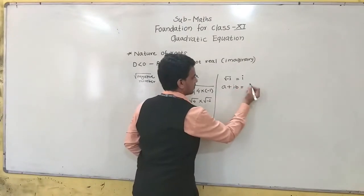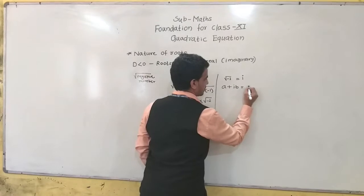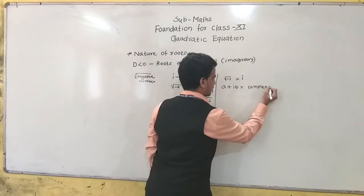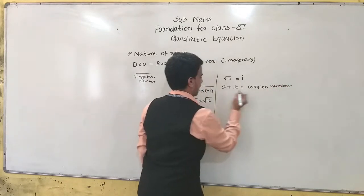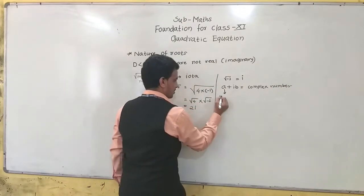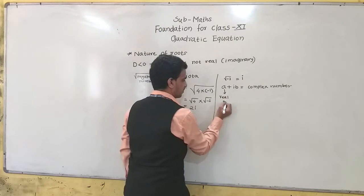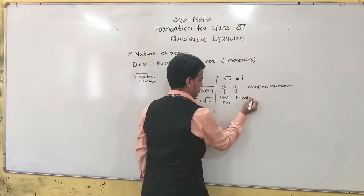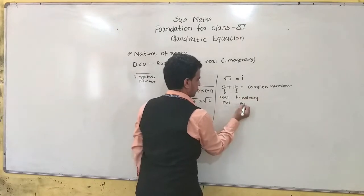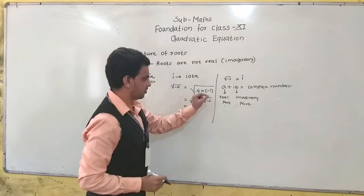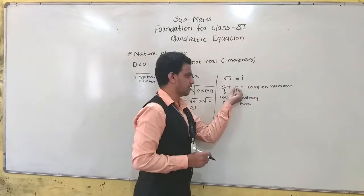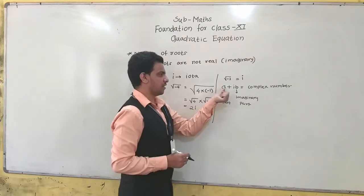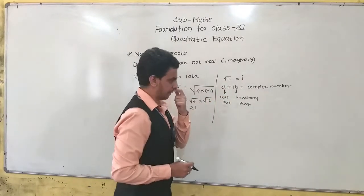If a number is in the form A plus i times B, then that number is called a complex number. The A part is called the real part, and B is called the imaginary part. Whatever number is multiplied with i is the imaginary part, and without i, the number is the real part.